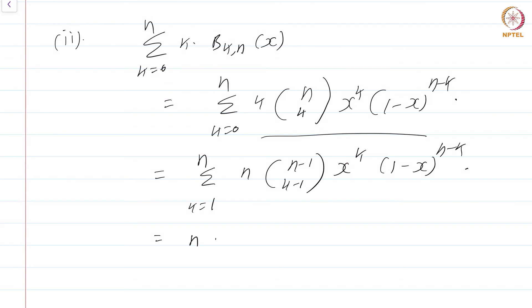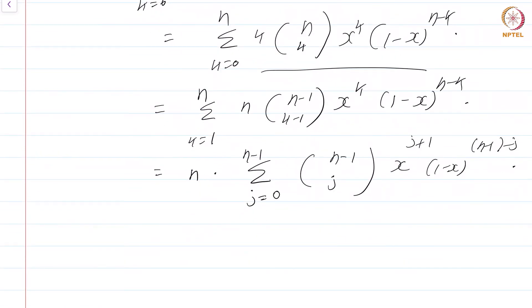We can write this as n times summation j equals 0 to n minus 1 of n minus 1 choose j. All I have done is set k minus 1 to be j. So, x power j plus 1 times 1 minus x power n minus 1 minus j. So, all I have done is set k to be equal to j plus 1, so this is just standard manipulation that you are no doubt familiar with from high school.